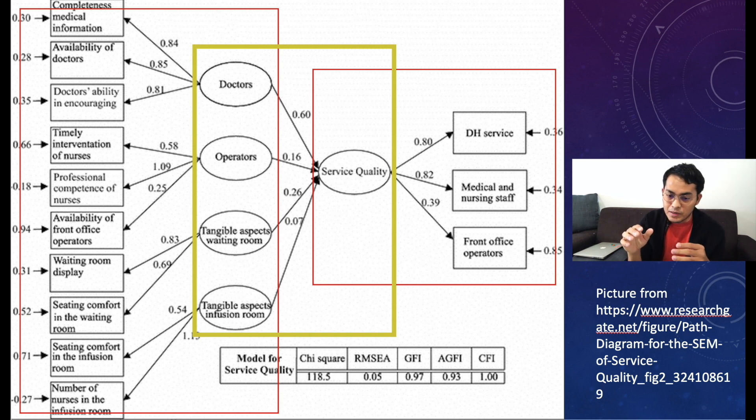But actually, in the path model, it usually has mediating variables, moderating variables, so it's more complicated than this. But I just chose only the simple one here to understand more. So SEM has two models: measurement models and structural models or path model.